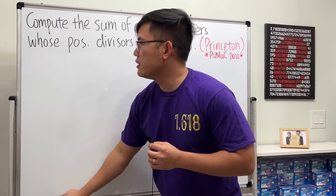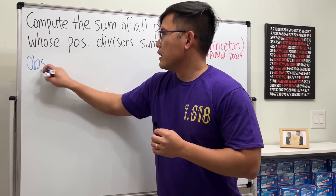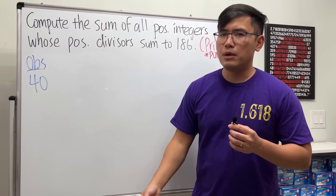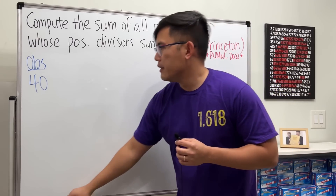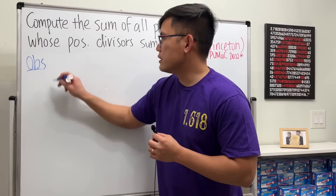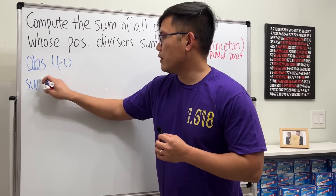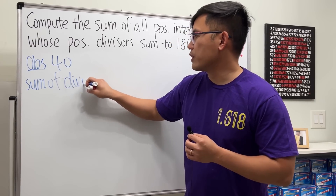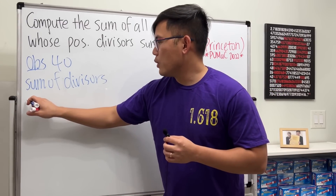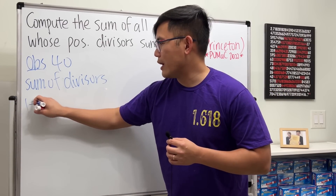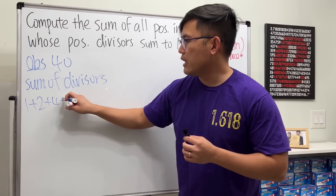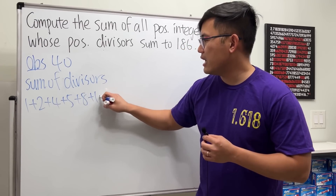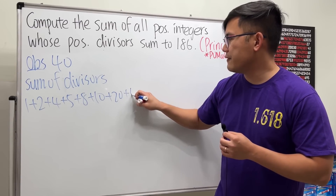Suppose I have the number 40 and I want to know the sum of its divisors. The sum of the divisors of 40 is: 1 + 2 + 4 + 5 + 8 + 10 + 20 + 40.